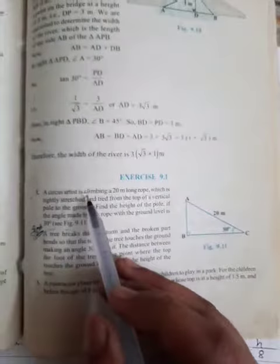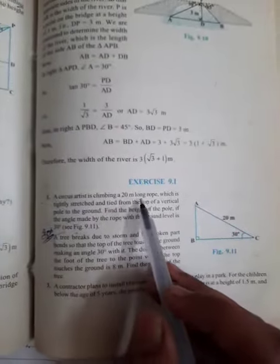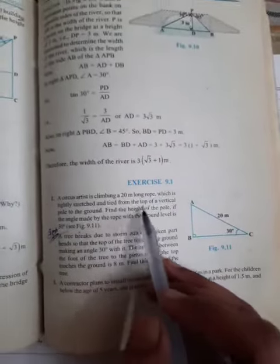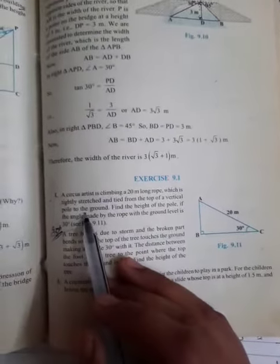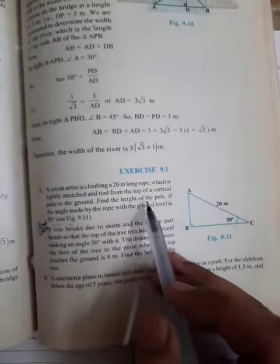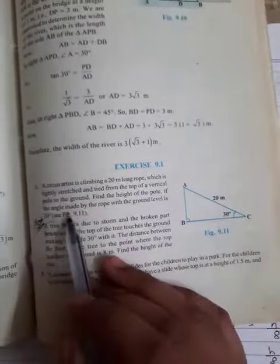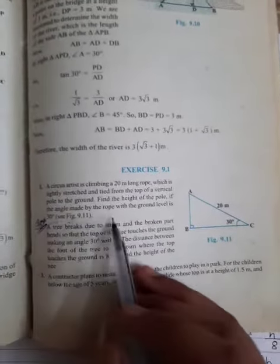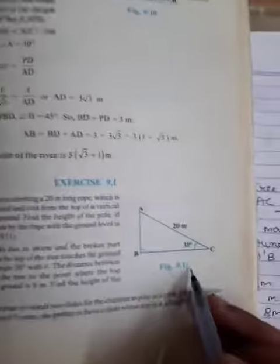A circus artist is climbing a 20 meter long rope which is tightly stretched and tied from the top of a vertical pole to the ground. Find the height of the pole if the angle made by the rope with the ground level is 30 degrees. Look at figure 9.1.1 in your textbook.